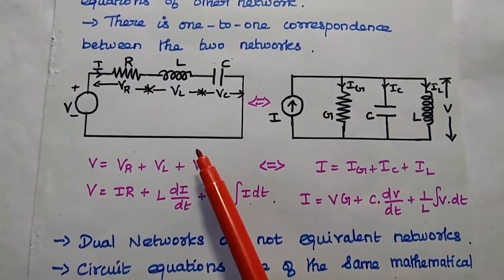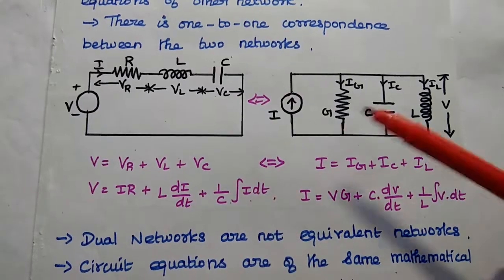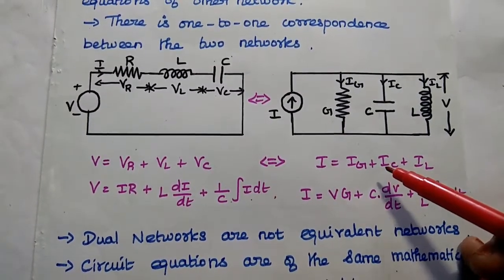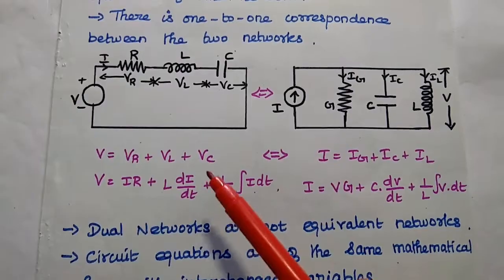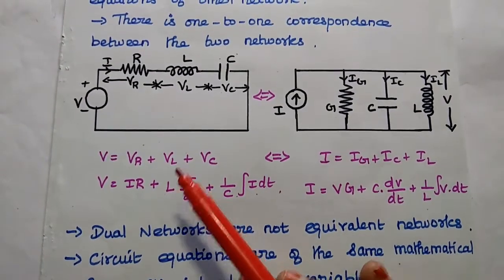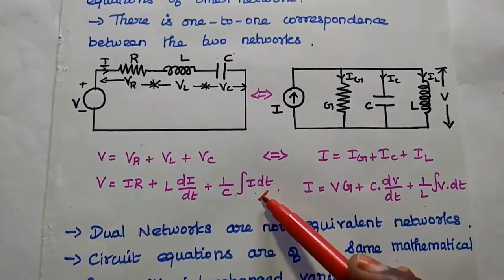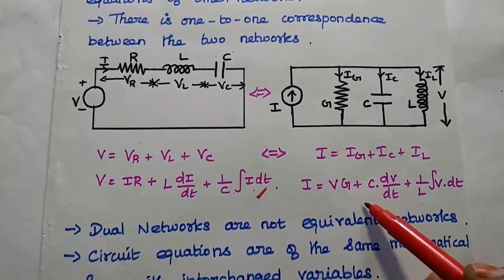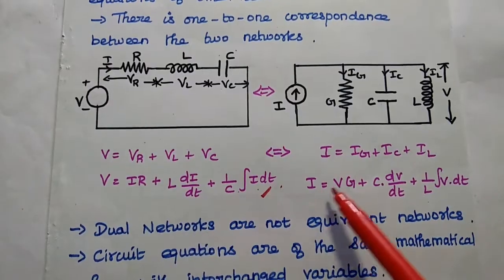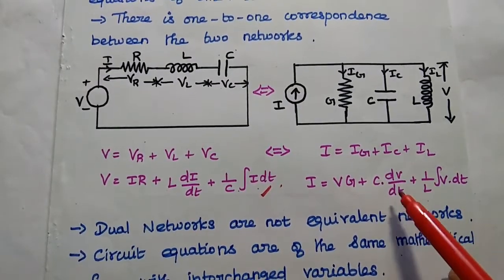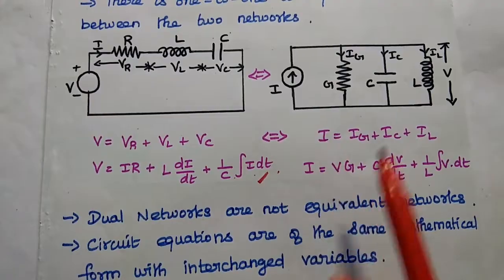Voltage is the same; we can apply Kirchhoff's voltage law here. The total voltage V is equal to the sum of voltage drops: Vr plus Vl plus Vc. Here the total current is equal to the sum of outgoing currents: Ig plus Ic plus Il. The voltage drop equations are: Vr equals I times R, Vl equals L times dI/dt, and Vc equals (1/C) times the integral of I dt. The same form is applicable over here, with I replaced by V and 1/R replaced by G, giving: I equals Vg plus C times dV/dt plus (1/L) times the integral of V dt. So both equations are similar.